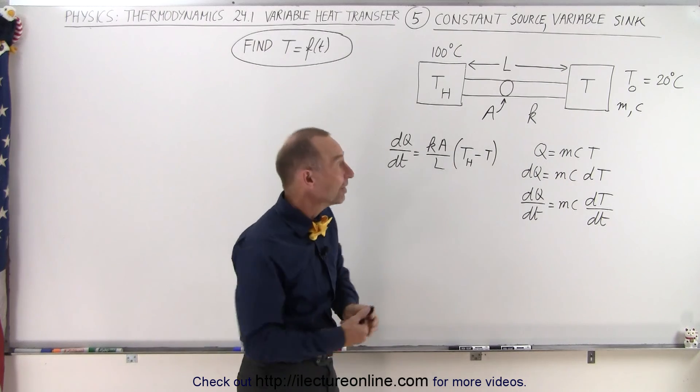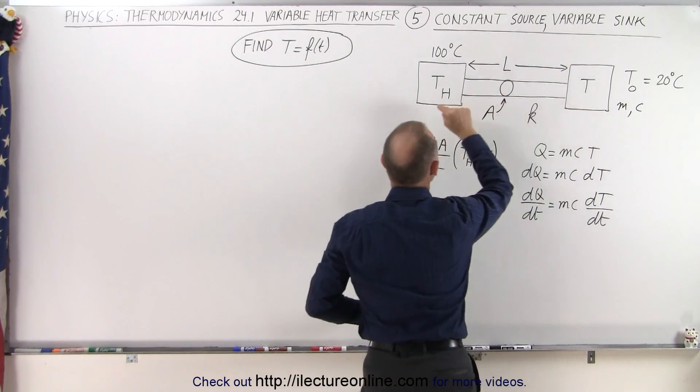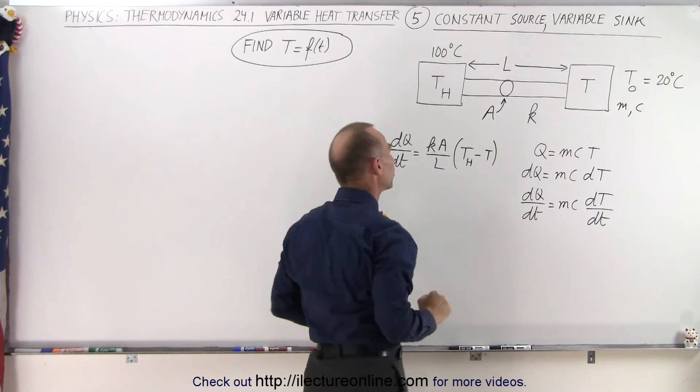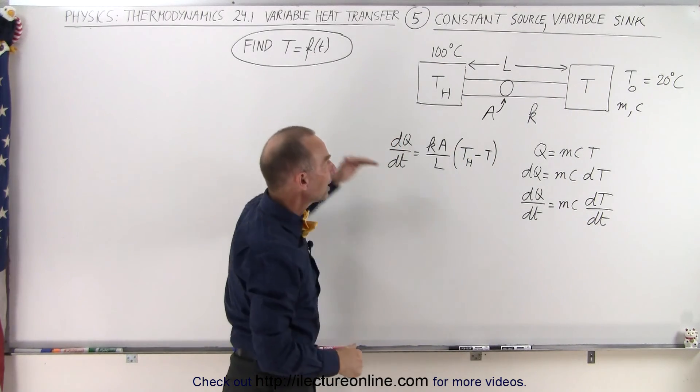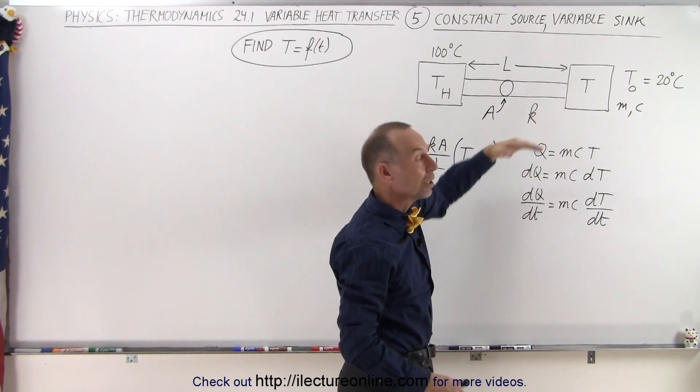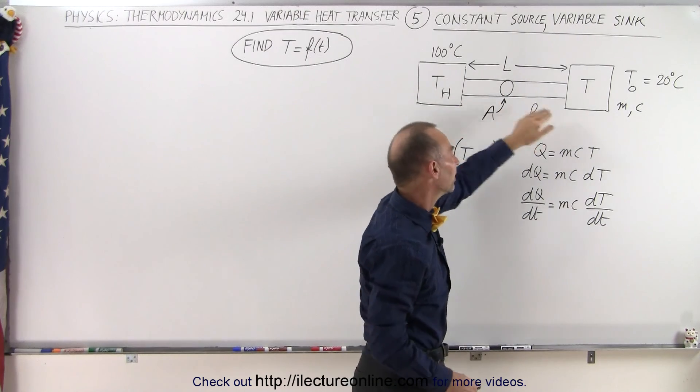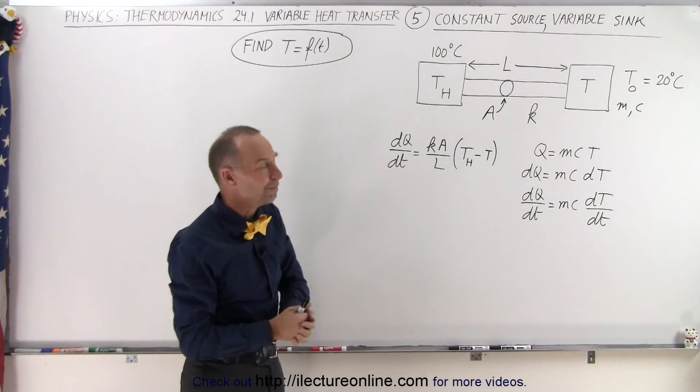The reason for that is in this case the heat sink is what can vary in temperature. The heat source is kept constant at 100 degrees centigrade. So as heat transfers from the heat source to the heat sink, the heat sink will heat up. The rate at which the heat transfer will diminish until both are at the same temperature. So how do we come up with that equation?